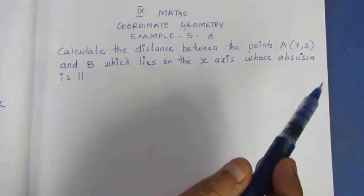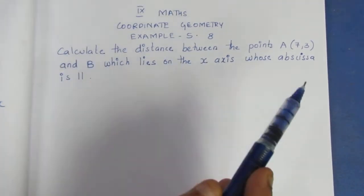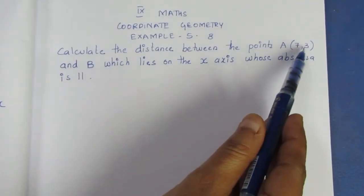Calculate the distance, distance formula, A to B distance formula. Point A is (7,3).